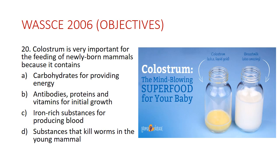Question twenty: colostrum is very important for newly born mammals because it contains antibodies, proteins, and vitamins for initial growth — answer B. Colostrum is the yellowish fluid that comes from a mother mammal's breast in the first three days or week after birth. It contains antibodies to fight infections and proteins for the baby's development, making it crucial for the newborn.